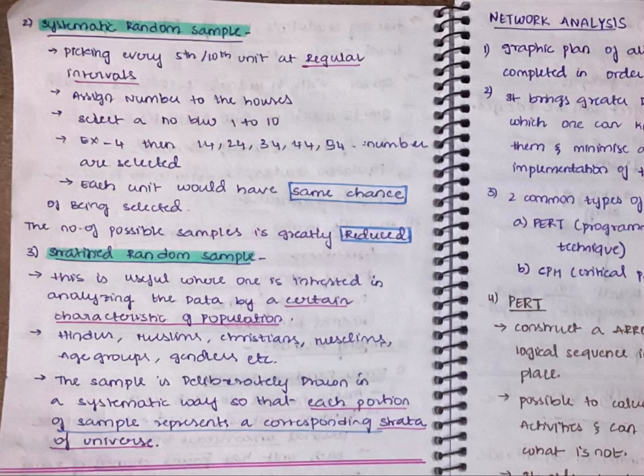The third one is stratified random sample. This is useful where you are interested in analyzing the data by a certain characteristic of the population. If you want to do any studies between male and female, or any studies between Hindus, Muslims, or Christians, this is the study you should go for.